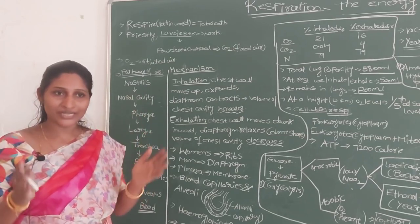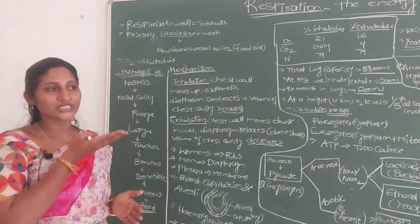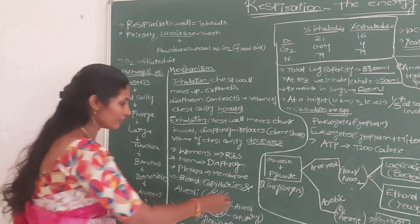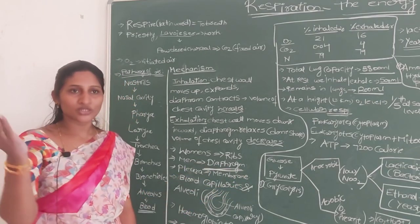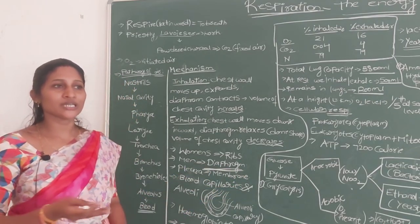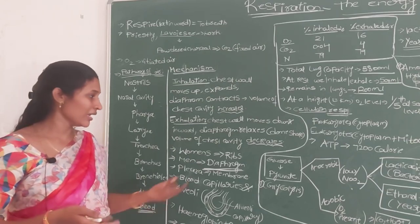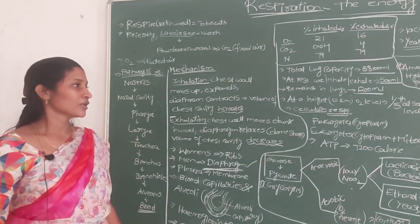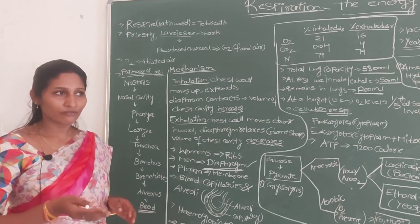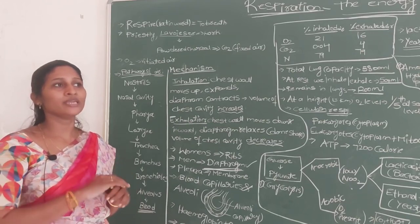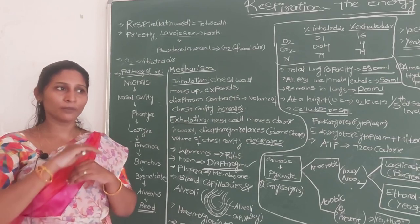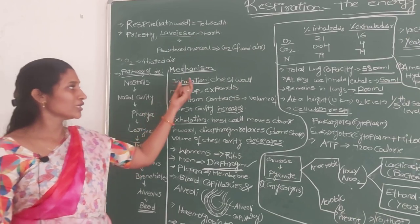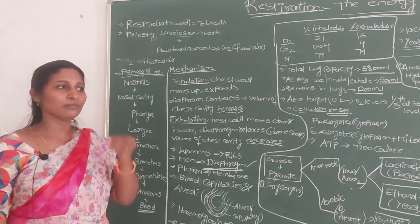Imagining the chest cavity as a room, the floor is a special muscle called the diaphragm. The diaphragm is the muscular layer at the floor of the chest cavity and plays a major role in respiration. At rest (relaxed state), the diaphragm is dome-shaped, with the swollen part situated inside the chest cavity.